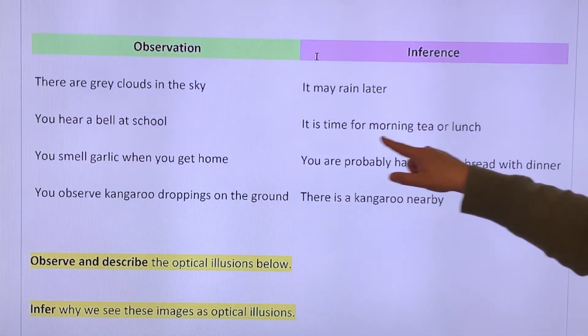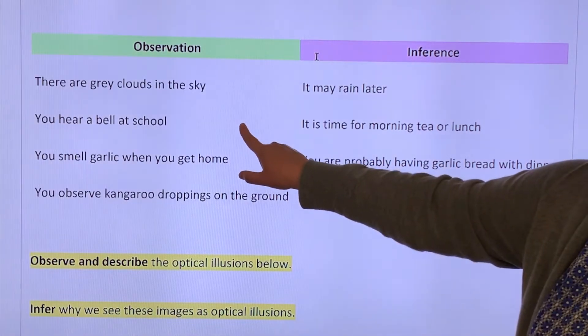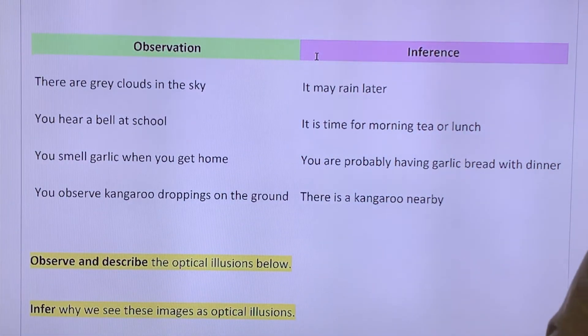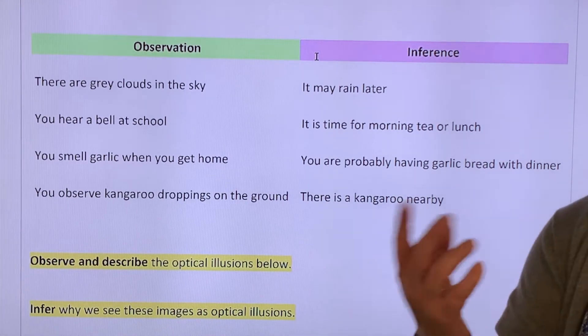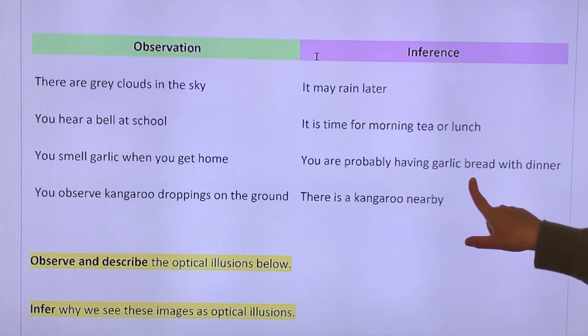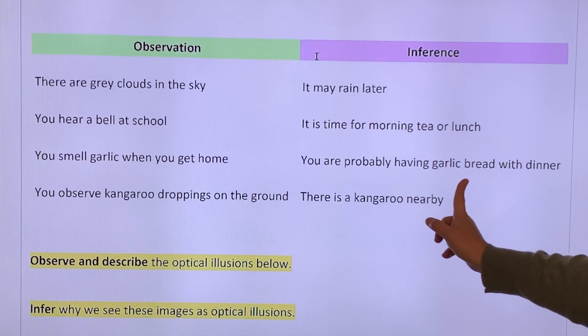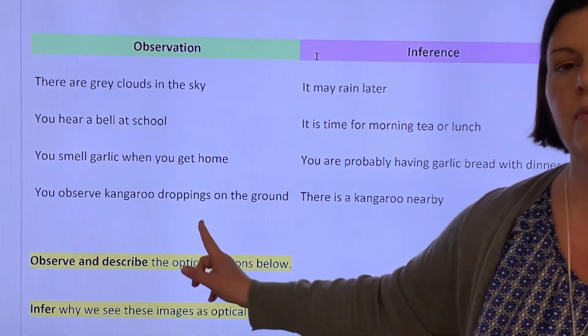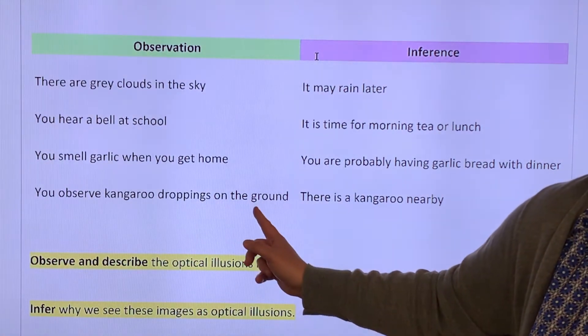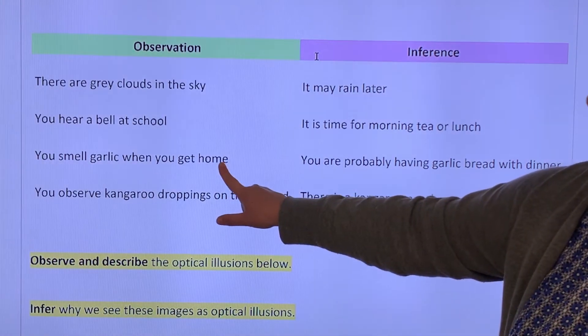You hear a bell at school. It's time for morning tea or lunch. When's the other times that you hear a bell at school? Home time. Start of the day. Fire alarm. Lockdown. So my observation, if I then start doing my observations and I'm writing down times, or I observe that everyone's going to the tuck shop, my inference could be then it is morning tea or lunch. When you smell garlic when you're getting home, you're probably having garlic bread with dinner. Pretty good observations. Or do we use garlic in other things? Yes. So even though, because we want garlic bread, we go, I infer I'm having garlic bread, you might actually be having something totally different. Your inference may be incorrect, but you're still doing it based on an observation.